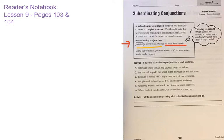So what part cannot stand on its own? 'Because a storm was coming' isn't a complete sentence on its own. 'We went home early' could be a complete sentence on its own. So the subordinating conjunction is going to begin the piece that cannot stand on its own — 'because a storm was coming.' The word 'because' is your subordinating conjunction in that sentence.